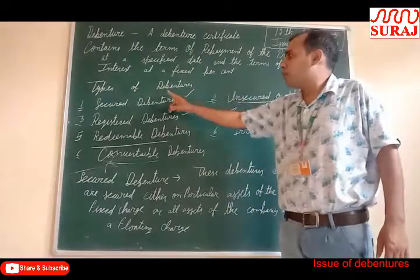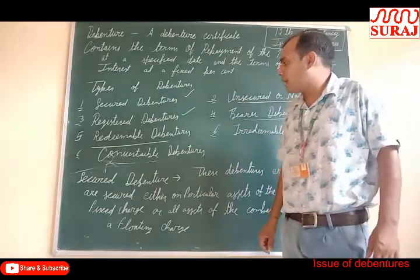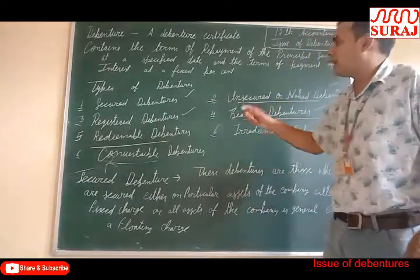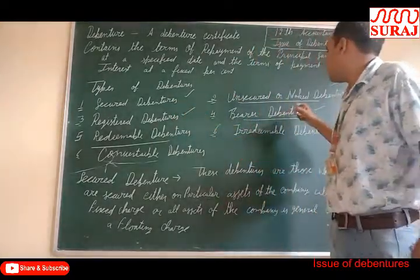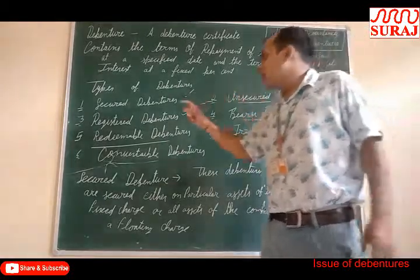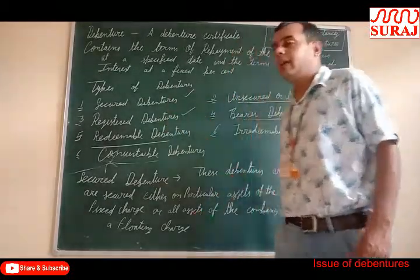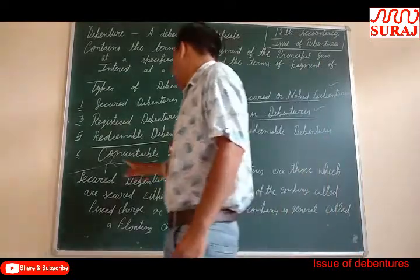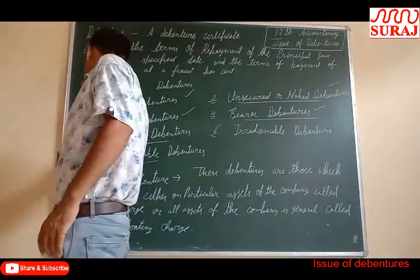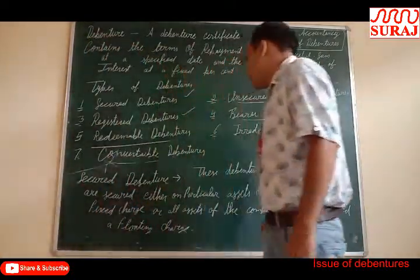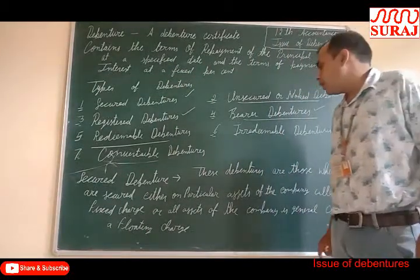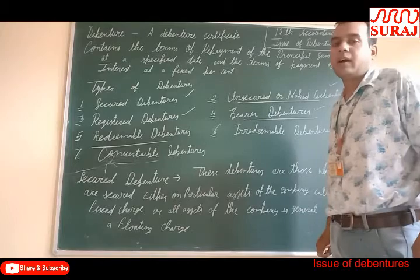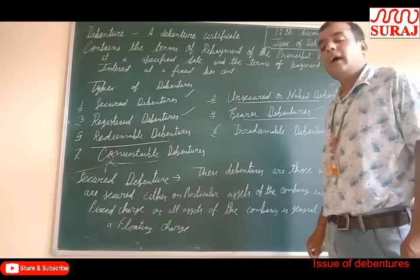Again I repeat, types of debentures: 1 — secured debenture, 2 — unsecured debenture, 3 — registered debenture, 4 — bearer debenture, 5 — redeemable debenture, 6 — irredeemable debenture, 7 — convertible debenture. Dear students, I hope you understand. If you found this helpful, please like and subscribe to our YouTube channel. Thank you. Have a nice day.